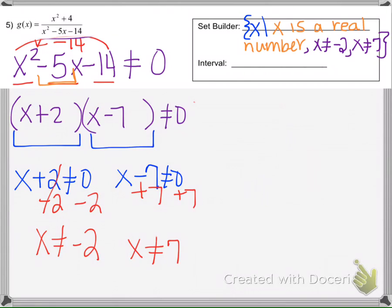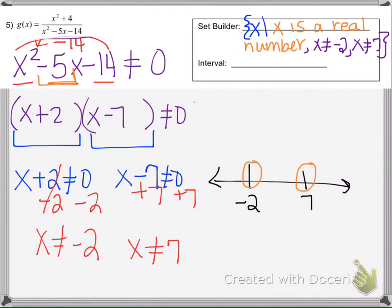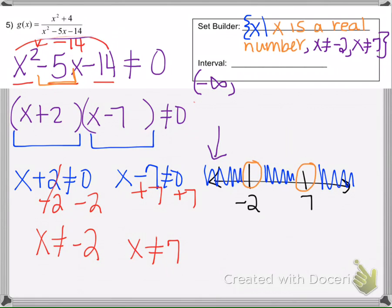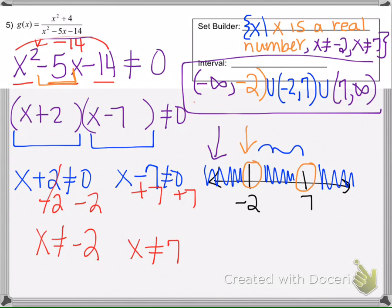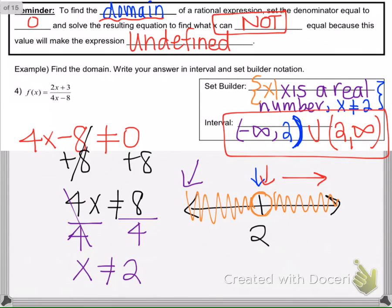Writing this as an interval, we draw a number line with negative 2 and 7 marked, neither of which can be included. So x can be anything to the left of negative 2, anything between negative 2 and 7, or anything greater than 7. The interval notation is: negative infinity to negative 2, union negative 2 to 7, union 7 to positive infinity — three intervals because there are three regions of shading, compared to only two regions in the previous example.